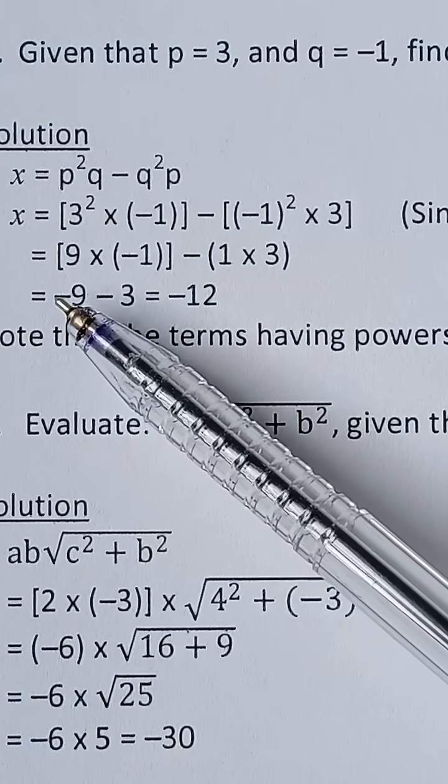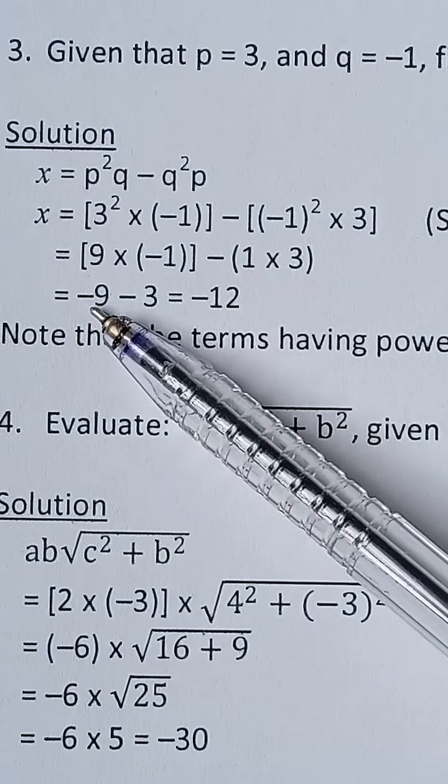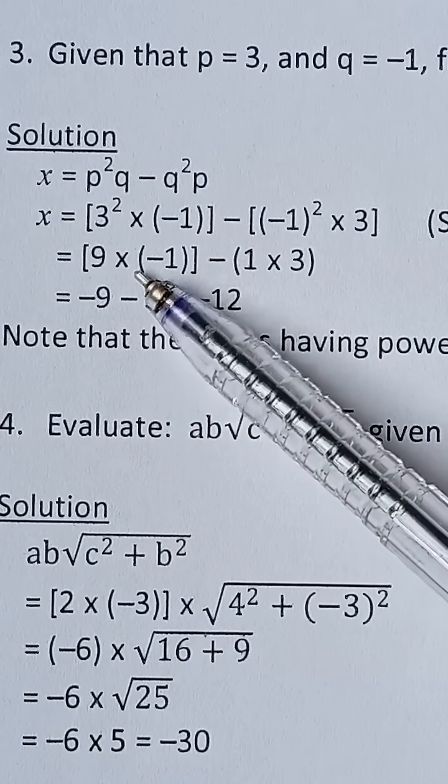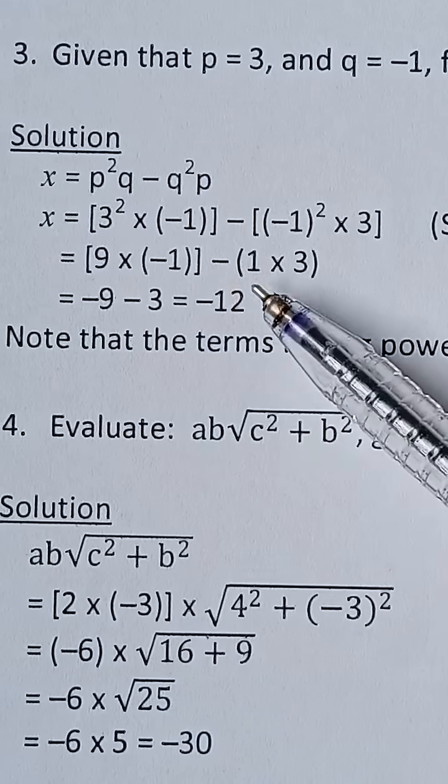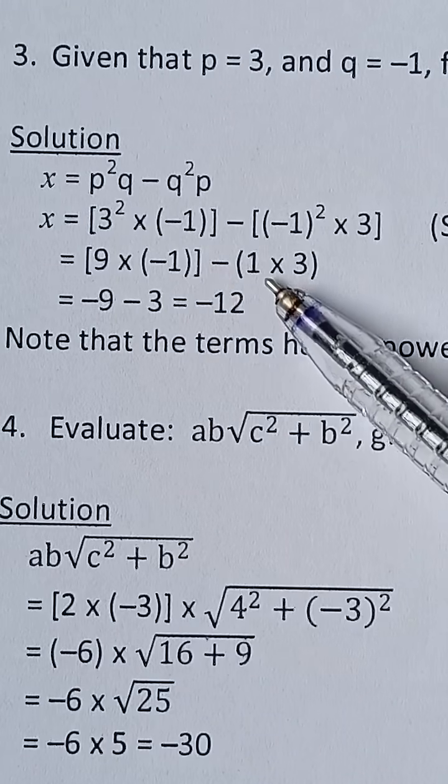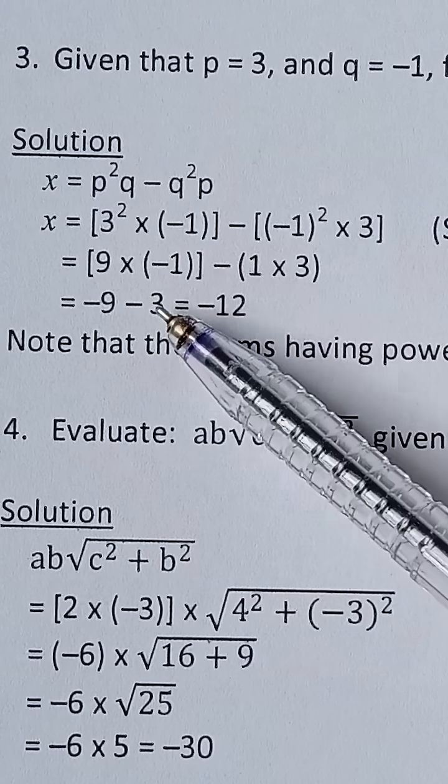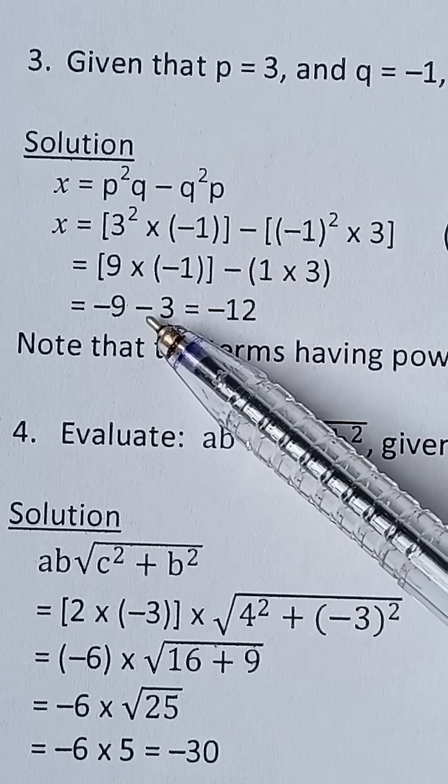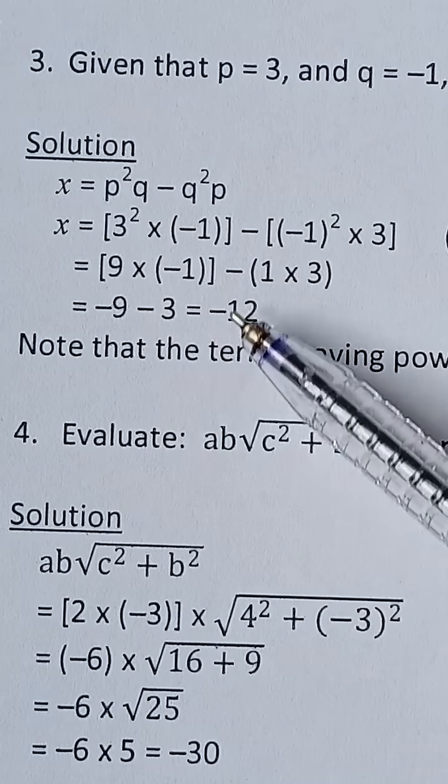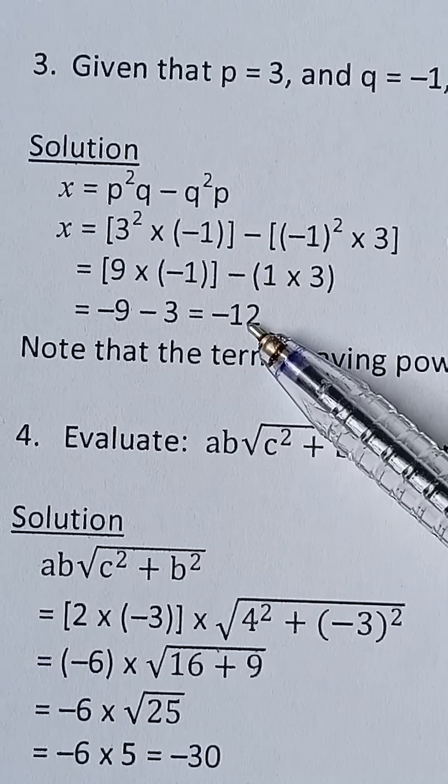And then moving on, we have negative 9. That is 9 multiplied by negative 1 is negative 9, then minus 1 multiplied by 3 is 3, so we say minus 3. So negative 9 minus 3 will give you minus 12 as the final answer.